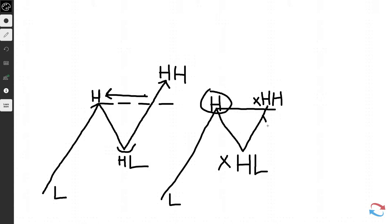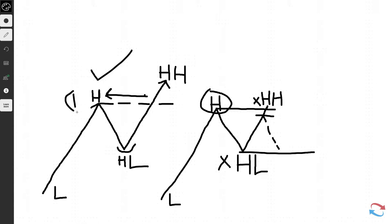If prices did not make a new high and went as high as here, this is not a trend and not a trending environment. What we could have is prices go up, come down, and then enter a range or even a downtrend. We cannot define the market as being in a trend until this move has happened — move up, move down, move up. You might number them: this is the first move, this is the second move, and this is the third move.